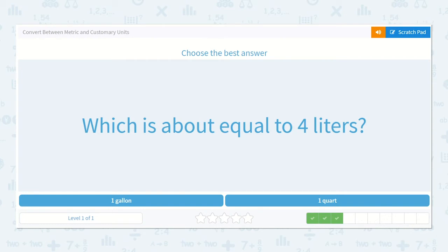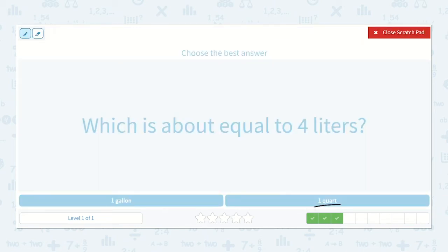Which is about equal to 4 liters? We talked about how a quart is about a quarter of a gallon. And a liter is close to a quarter of a gallon as well. So 4 liters would be like 4 quarters of a gallon, which would be one whole gallon.